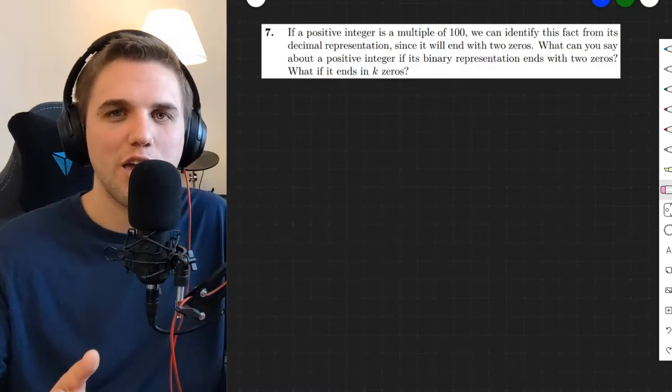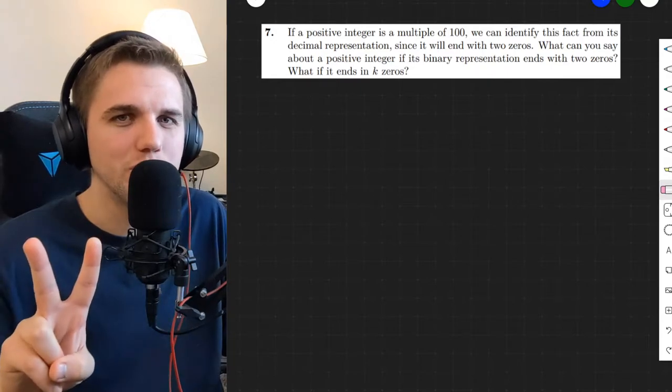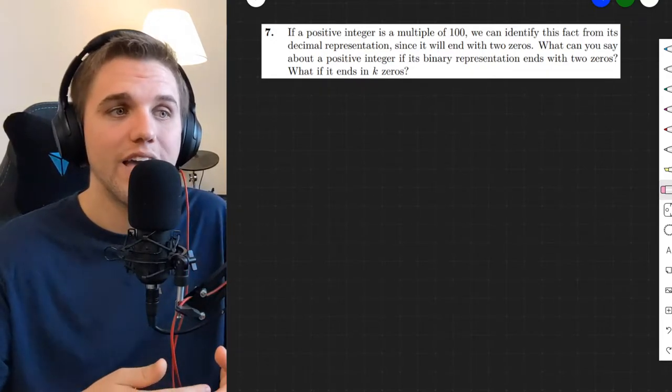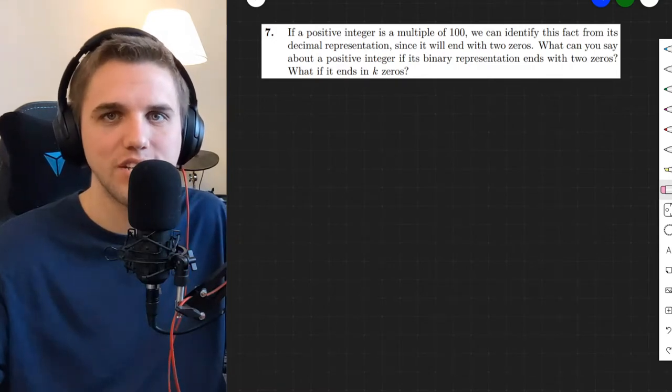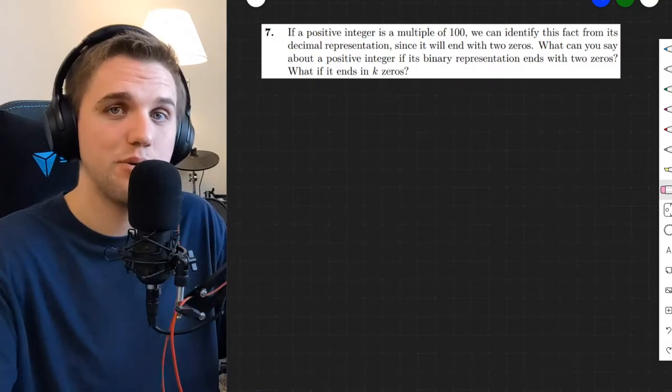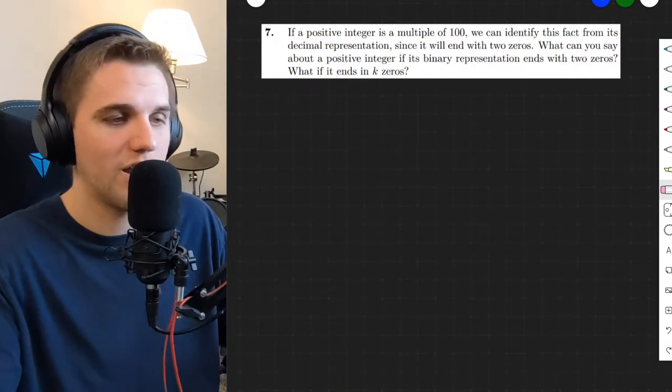Hey everyone, in this video we're going to be talking about what happens when a binary number ends with two zeros. We're also going to be talking about what happens when a binary number ends in k zeros, where k is some positive integer. This problem can be found in your free online discrete math textbook, and I'll leave a link in the description below so you can check that out. Alright, let's get started.